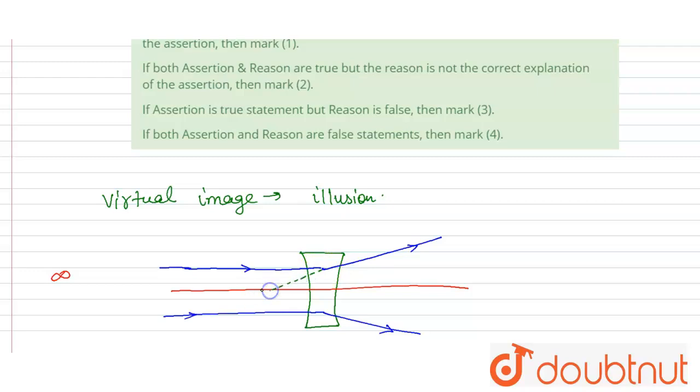So we will consider it is coming from those points and they meet at this point, and the image is formed at this point. Let this be I. So this image I is a virtual image. So here the rays seem like they are meeting at the point I, but they are not meeting really.